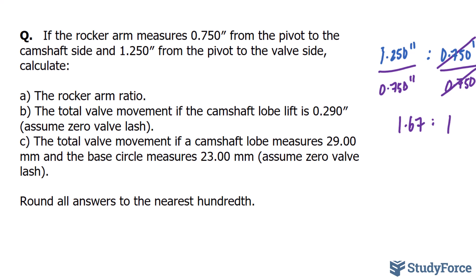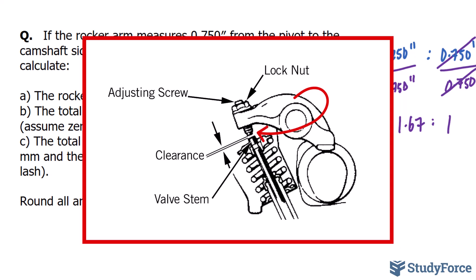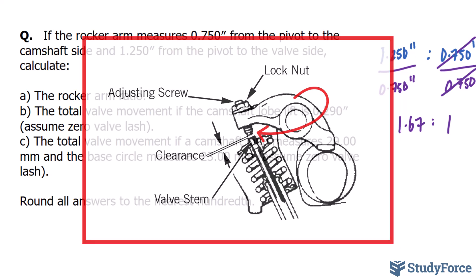And the valve lash value here, which we have to assume is zero, is the measurement of the small gap between the rocker arm and the valve. So for simplicity, we're making that value equal to zero.